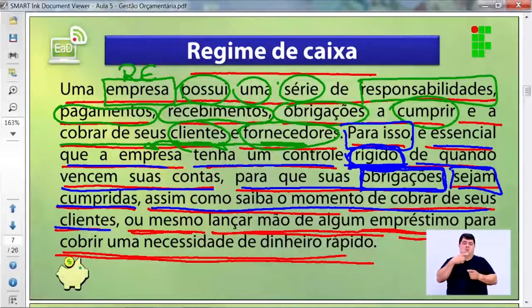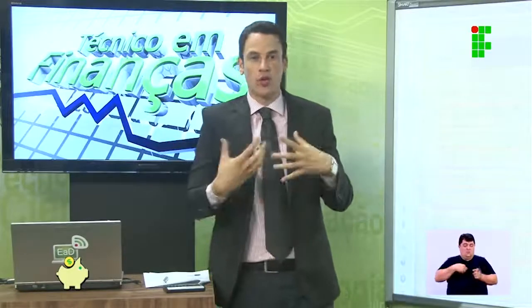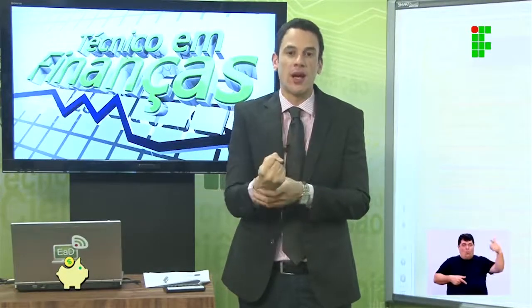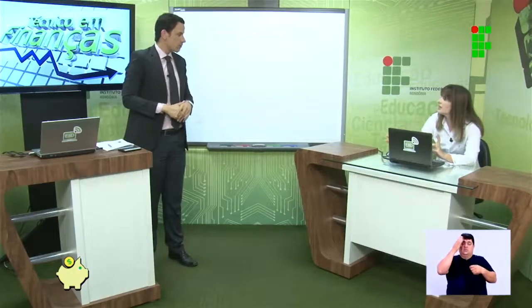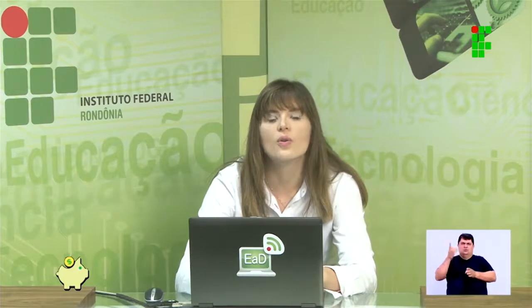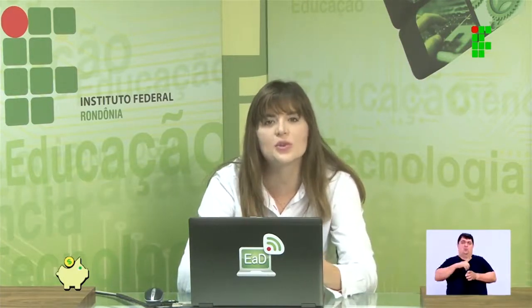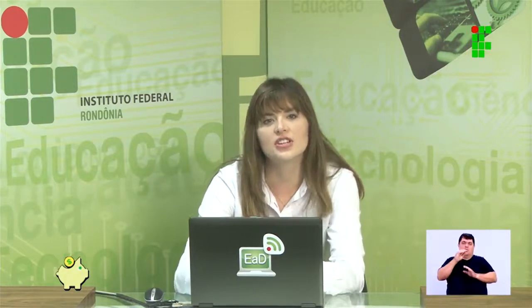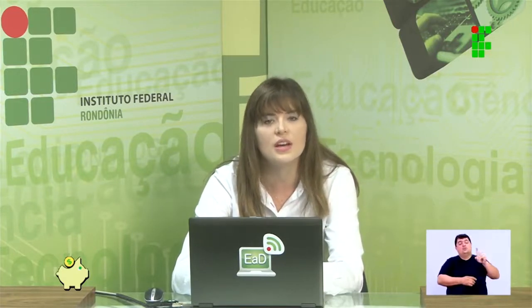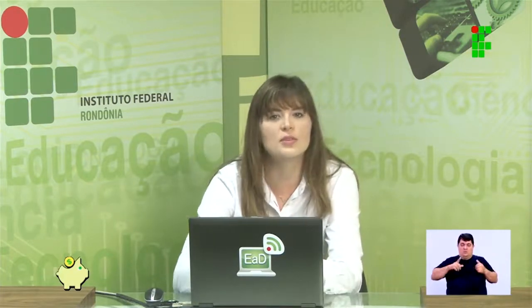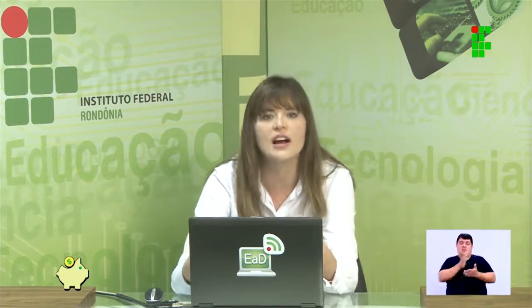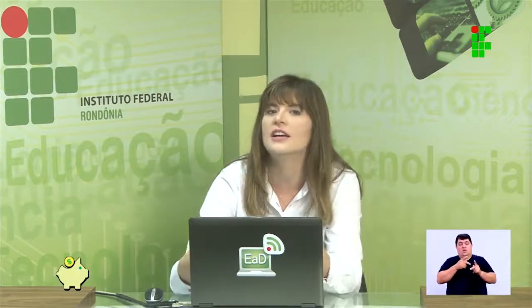Para cobrir uma necessidade de dinheiro rápida: o cliente não pagou em tempo hábil, a conta vai vencer, você precisa pegar emprestado em uma instituição financeira para honrar suas contas. As empresas têm que saber que existem esses dois controles. O micro e pequeno empreendedor tem dificuldade. O contador tem bastante controle contábil, mas o controle financeiro é um orçamento à parte — e é isso que a gente quer mostrar.